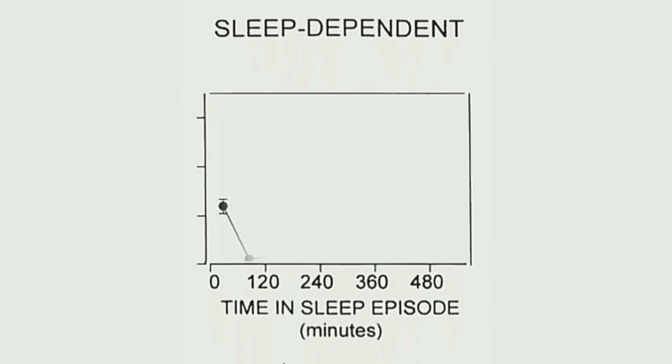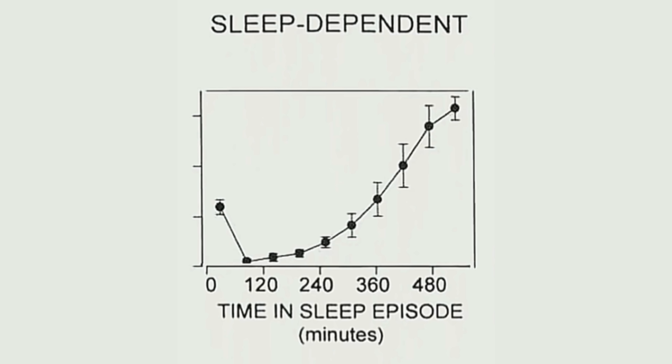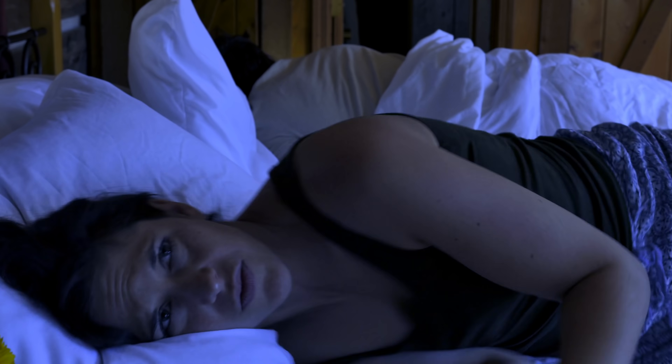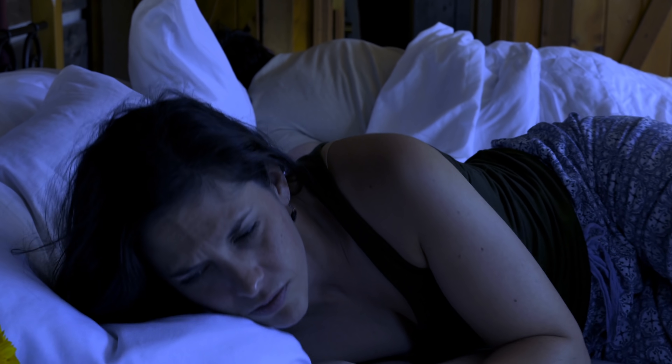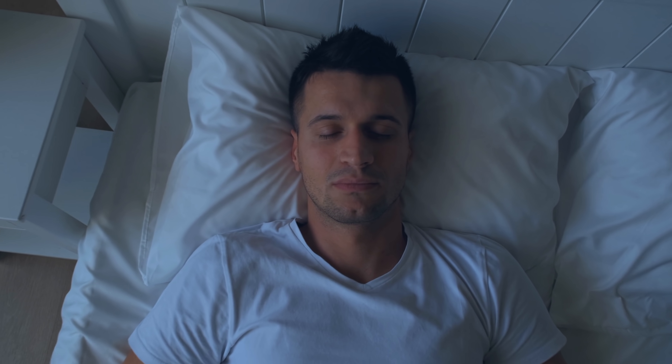Once you fall asleep, the drive for sleep dissipates as the night progresses. So the further you are along in your sleep episode, the drive for sleep decreases. And the further you are into your sleep episode, the percentage of time you spend awake slightly increases — for example, tossing and turning or perhaps looking at the clock. So you spend slightly more time in the awake phase the closer you are to the end of the sleep episode.